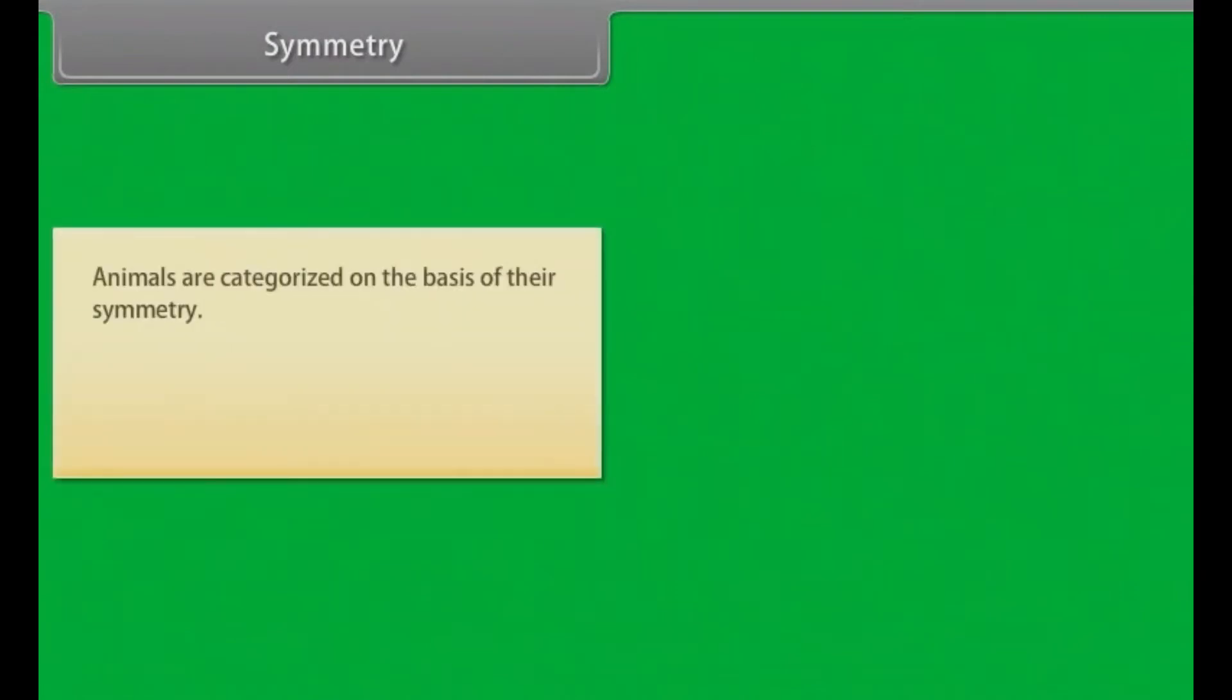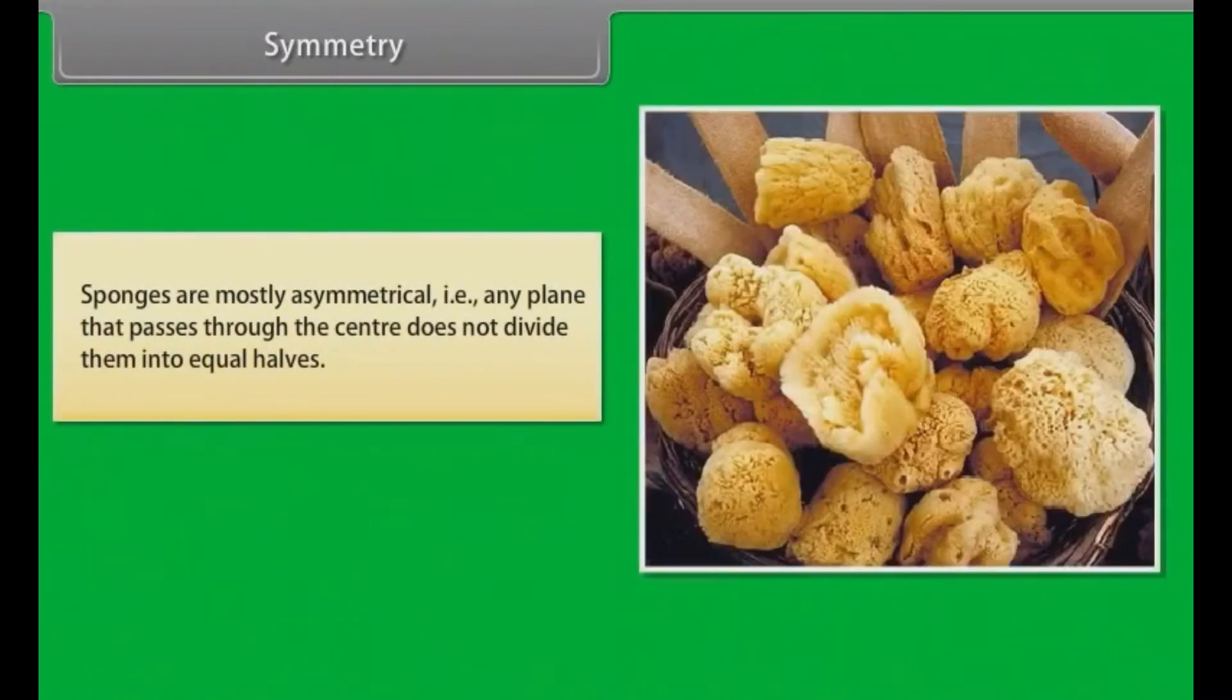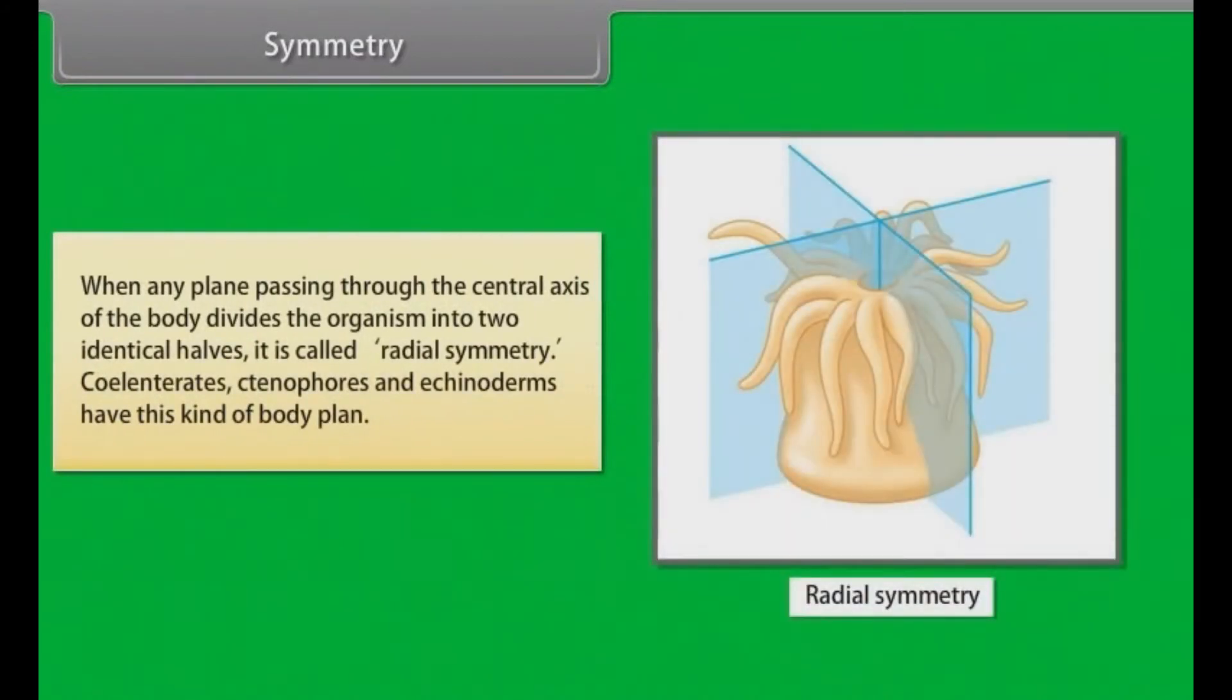Symmetry. Animals are categorized on the basis of their symmetry. They are asymmetrical, radially symmetrical, and bilaterally symmetrical. Let us know them one by one. Sponges are mostly asymmetrical. That is, any plane that passes through the center does not divide them into equal halves. When any plane passing through the central axis of the body divides the organism into two identical halves, it is called radial symmetry. Coelenterates, diploblastic ctenophores and echinoderms have this kind of body plan.